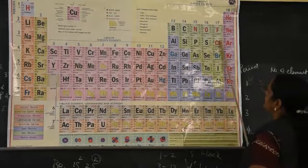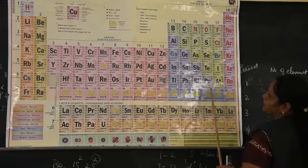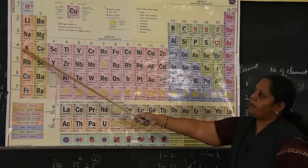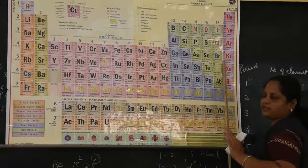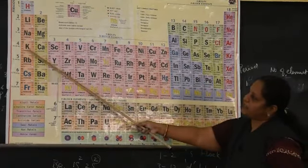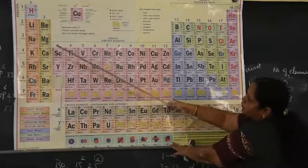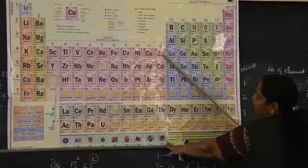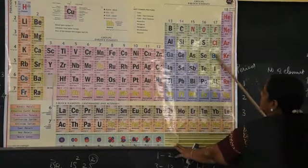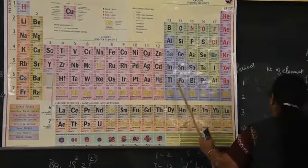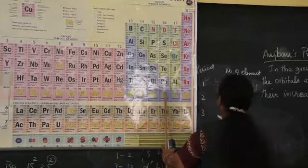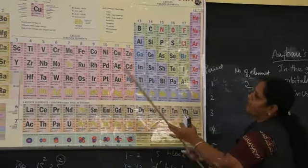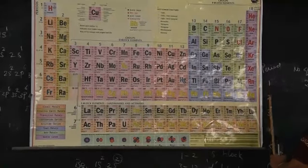The fourth period has 18 elements. The fifth period also has 18 elements. What about the sixth period? Listen carefully — the sixth period has 32 elements.